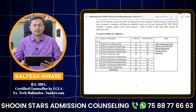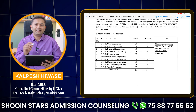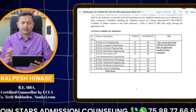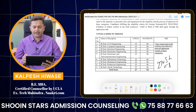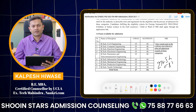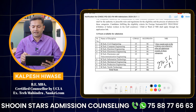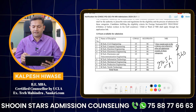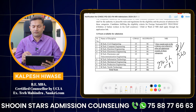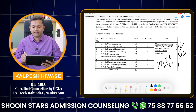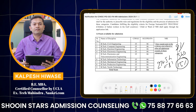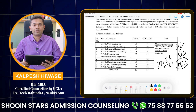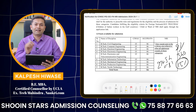So as we have understood, there are 78 seats in Computer Science. Likewise, if you do the total of 27 plus 54, it comes to about 81, and the total number of seats in VJTI is 540. So 81 out of 540 — if we calculate the percentage, it is 15%. So 15% of the seats are more than the sanction intake.